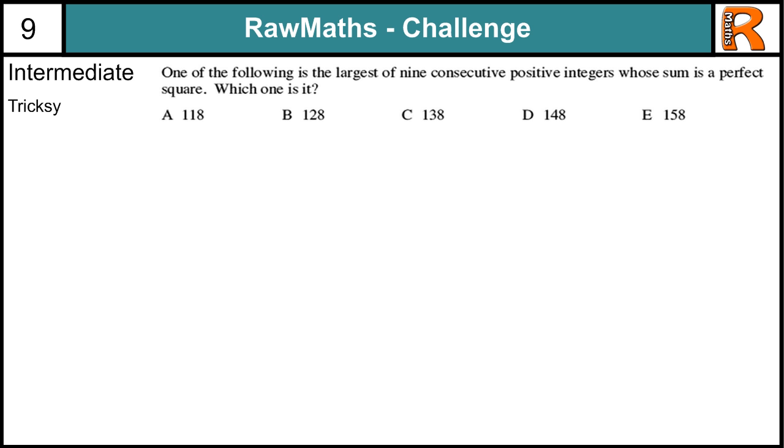Intermediate Trixie from Raw Maths Challenge number eight. If you haven't had a go at this question yet, pause the video and give it a try now. In this question, there's quite a bit of information here. One of the following is the largest of nine consecutive positive integers, whole numbers, whose sum is a perfect square. Which one is it?